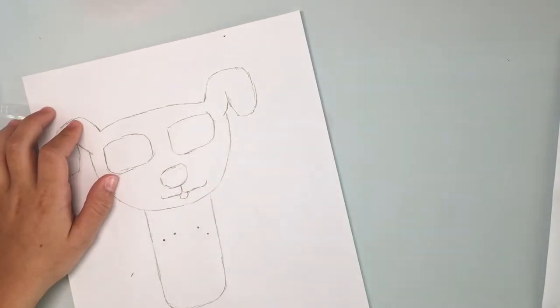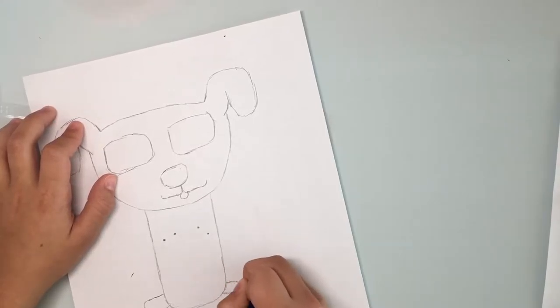Next, draw two areas where you want your arms to be. So my arms are going to be right from here to around here.